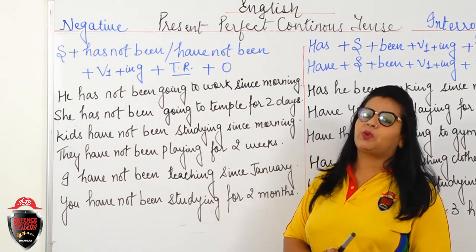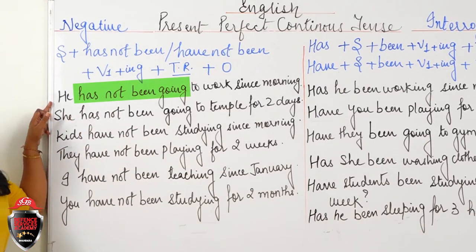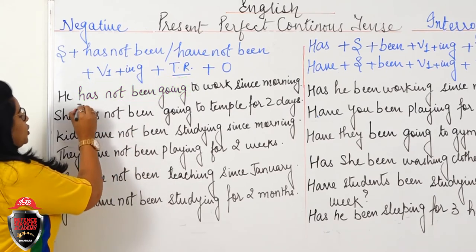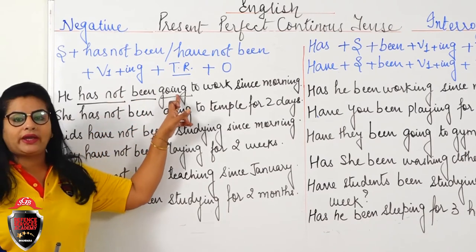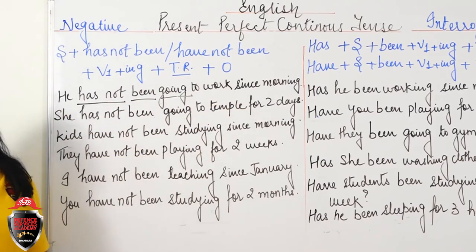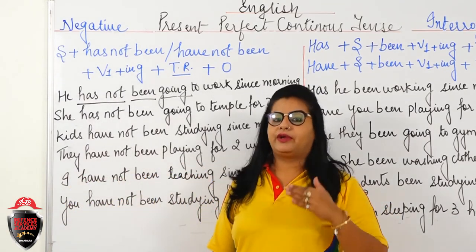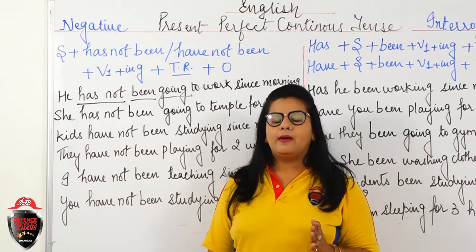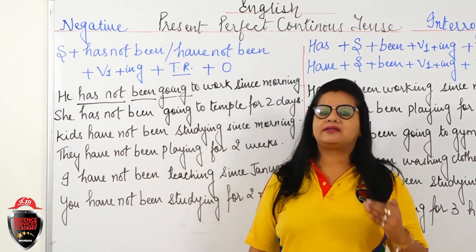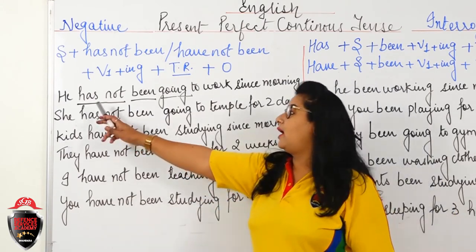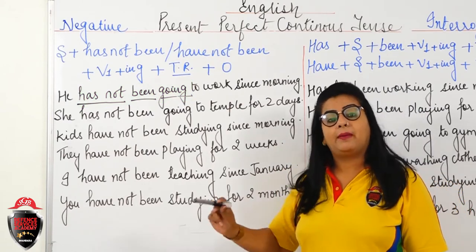Let's check examples for negative sentences. 'He has not been working' or 'He has not been going to work since morning.' Woh subah se kaam par nahi ja raha hai — abhi bhi nahi ja raha hai. Whenever Present Perfect Continuous Tense is used — whether affirmative, negative, or interrogative — since or for must be present. In negative also: 'She has not been going to temple for 2 days.' Woh pichhle doh dinon se mandir nahi ja rahi hai. For is used for duration; since for starting point.